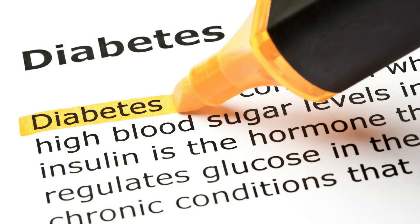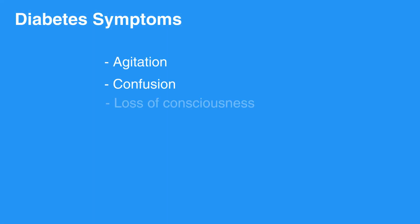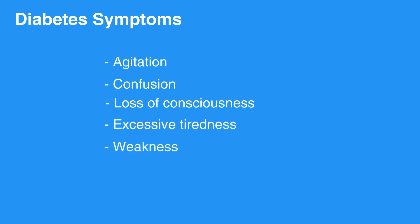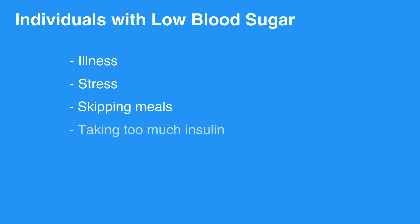Diabetes affects an individual's ability to regulate blood sugar. Fluctuations in blood sugar in either direction can produce symptoms such as agitation, confusion, loss of consciousness, excessive tiredness, weakness, and even seizure-like activity. Individuals with diabetes can experience low blood sugar due to illness, stress, skipping meals, or taking too much insulin.